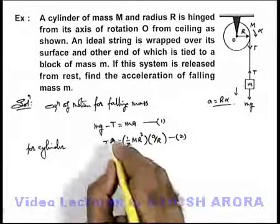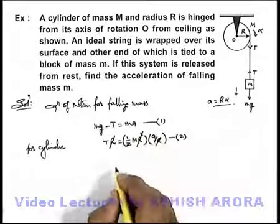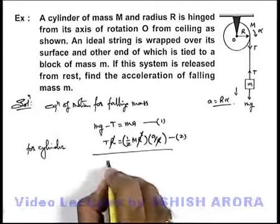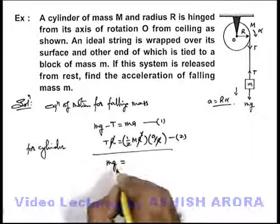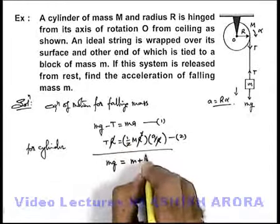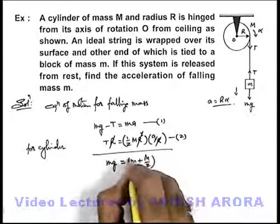In this situation, R gets cancelled out, and if we add the two equations, we'll get on the left-hand side the weight of the falling mass, and on the right-hand side we'll have (m + M/2)a.